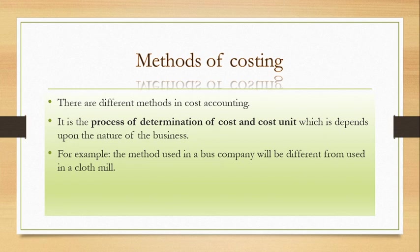The methods by which we ascertain costs are called methods of costing. You may ask why there are different methods — shouldn't one method be enough? But no, it varies because the nature of your business also varies. Depending on the type of business and industry, you need to apply the corresponding method.